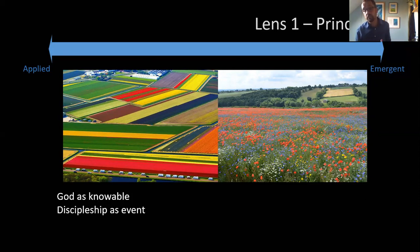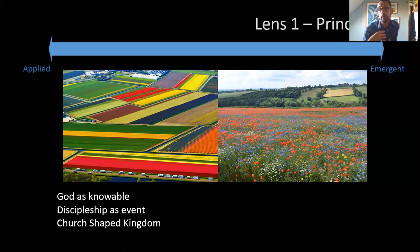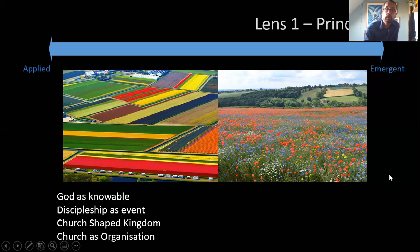In this theology, church becomes very important. Mission is oriented predominantly around the church and what the church is and does — so it's a church-shaped kingdom. If the church is about enabling the kingdom of God to grow, the church is the main agent of the kingdom, and so the church as an organization is really important, along with its structures and its processes.